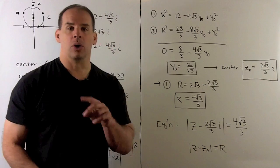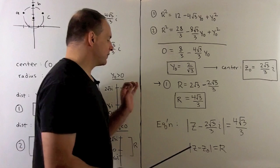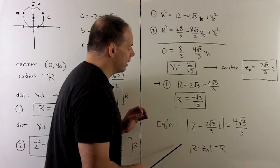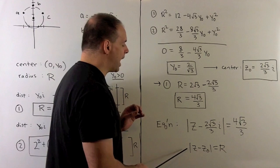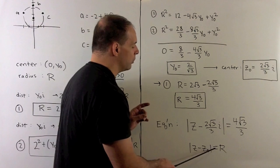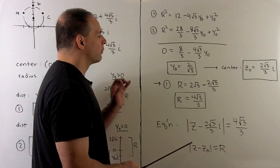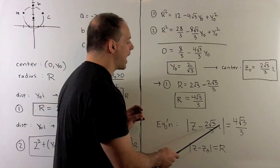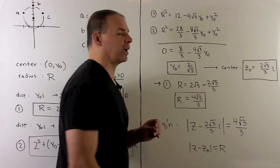The locus is just part of the circle, but the equation for the whole circle is as follows. Using complex numbers, the equation of a circle is the modulus of z minus z₀ (the center) equals the radius. So the equation for this circle is |z − (2√3/3)i| = 4√3/3.